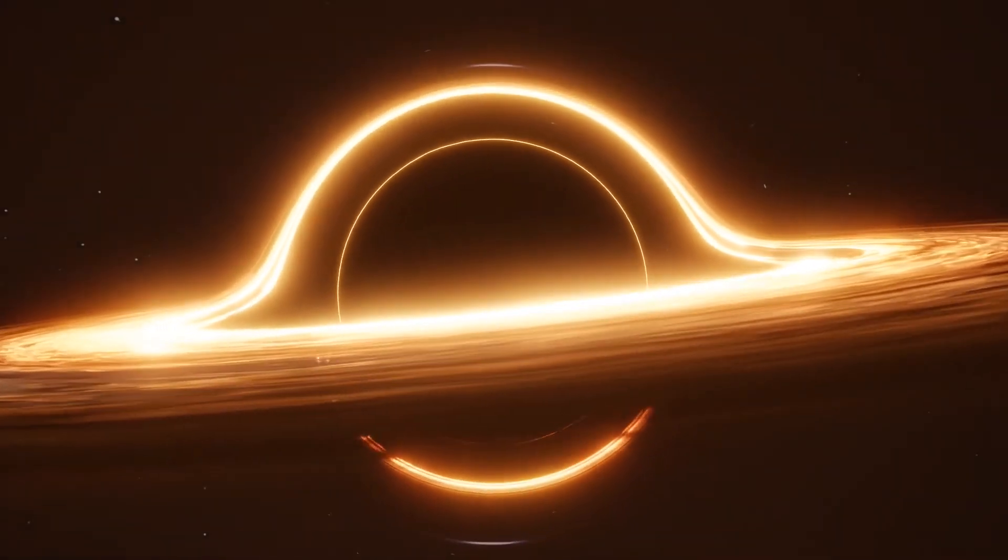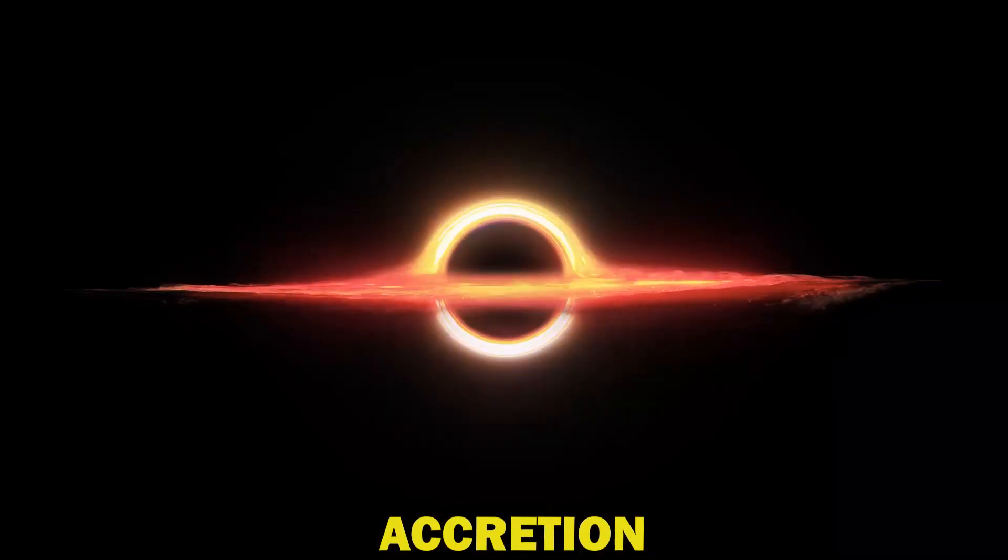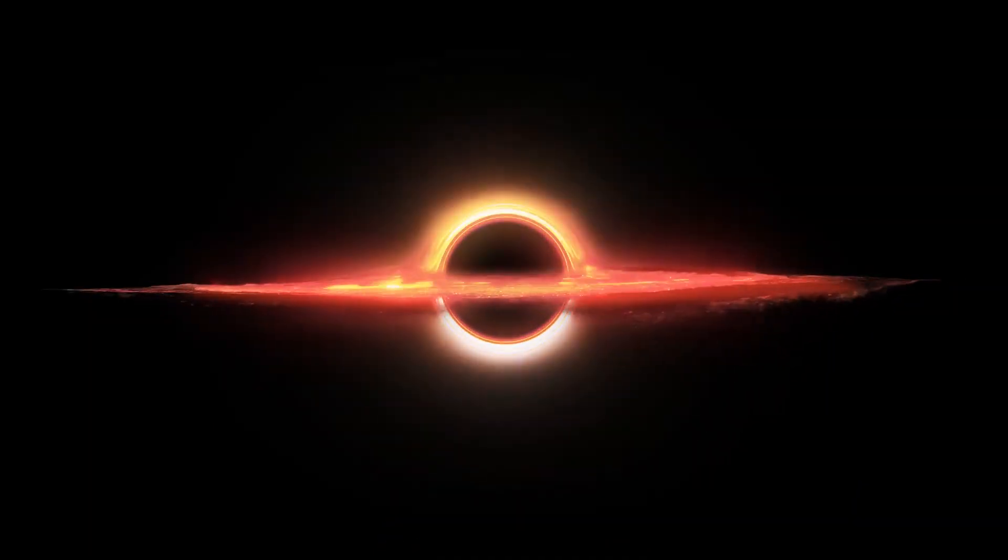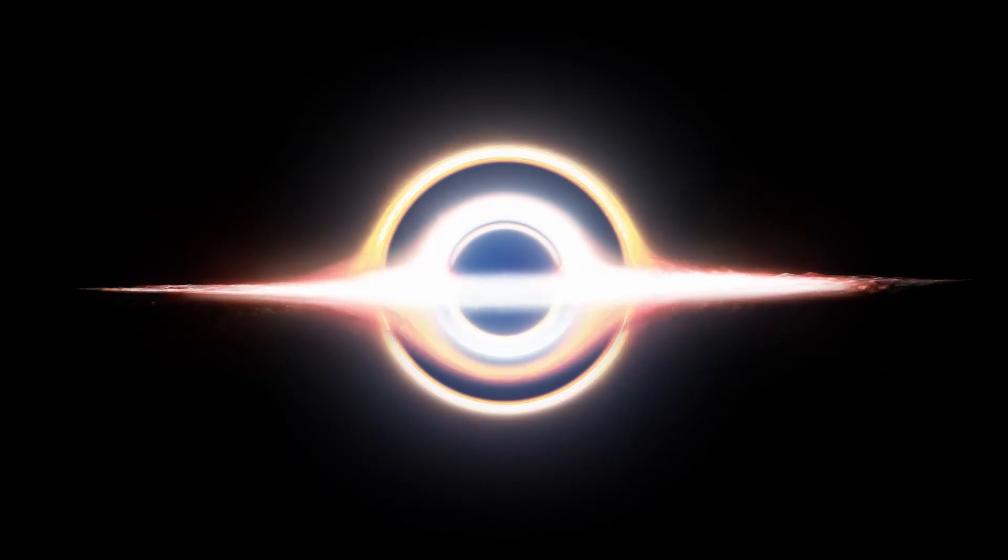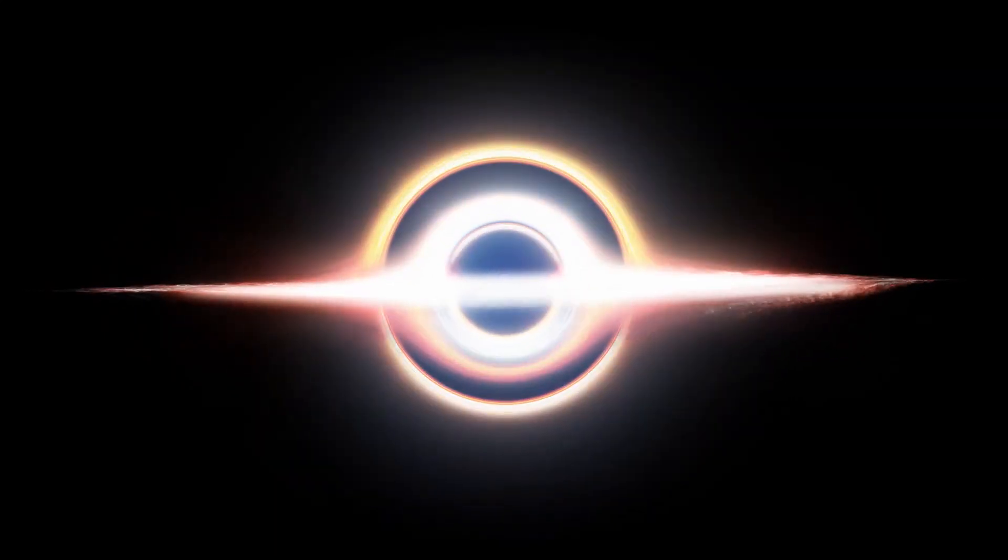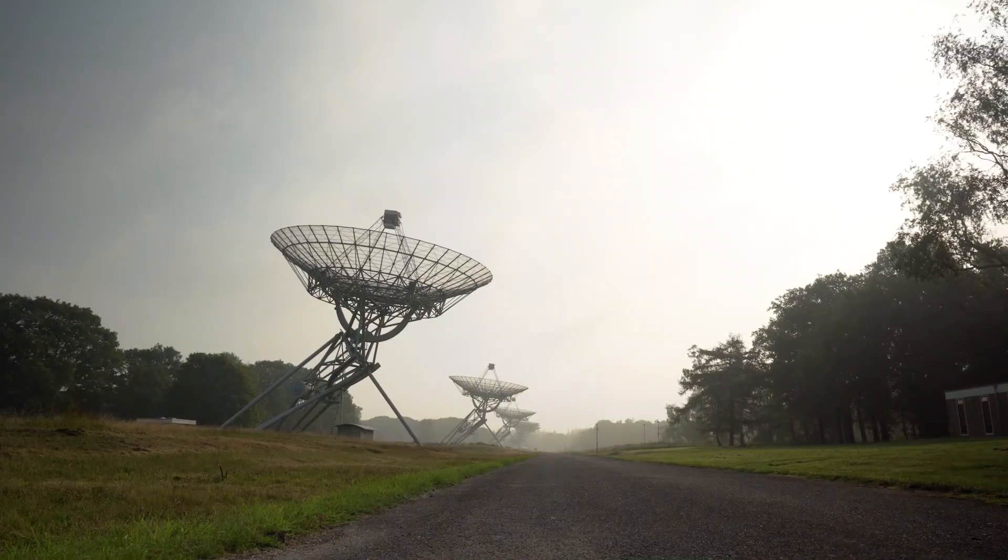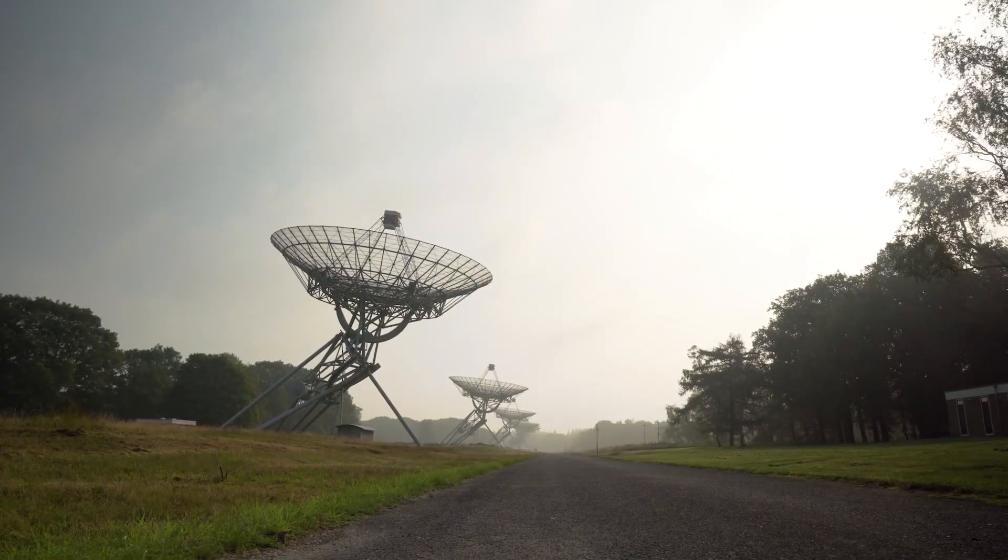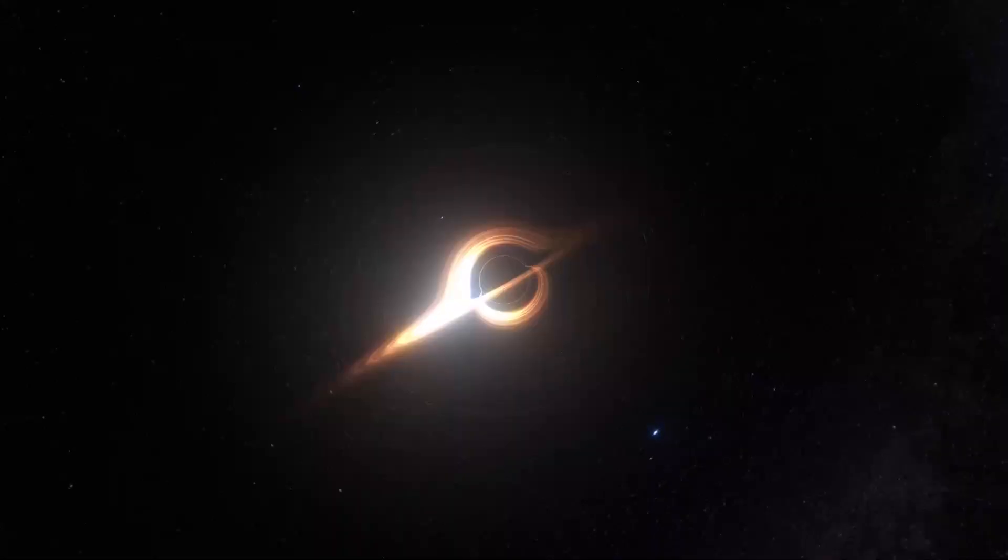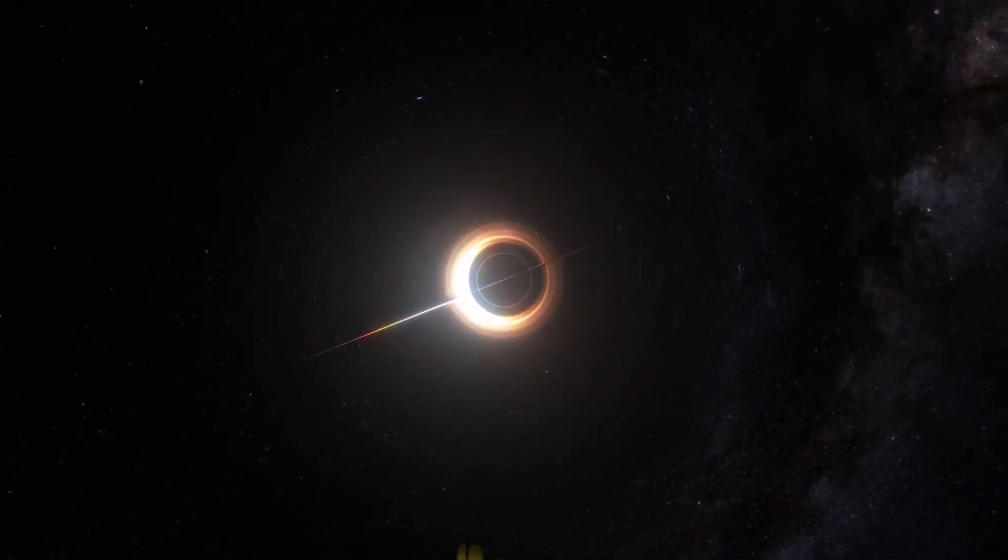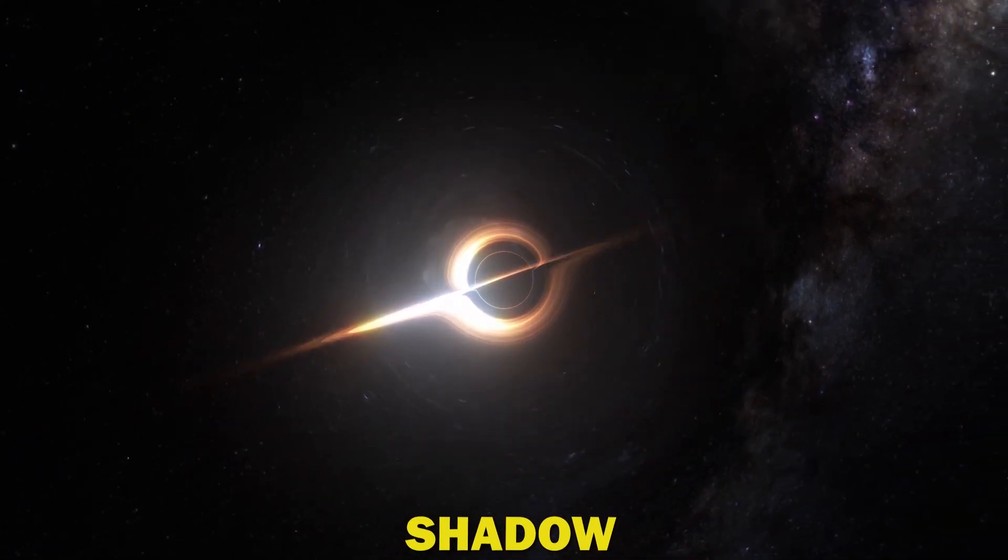Black holes often absorb nearby stuff through a process known as accretion. This surrounding matter accreting onto the hole heats up through viscous dissipation and converts gravitational energy into radiation, radiating bright light at many frequencies, including radio waves that can be picked up by radio telescopes. This shining material accreting onto the black hole crosses the event horizon, resulting in a dark area over a bright background. This is the so-called black hole shadow.